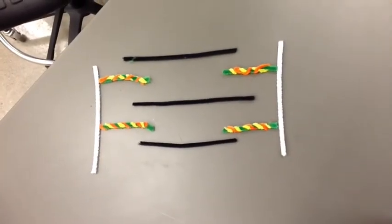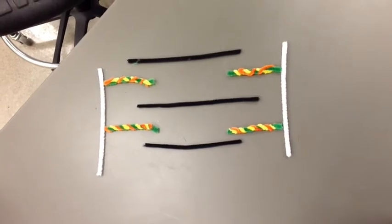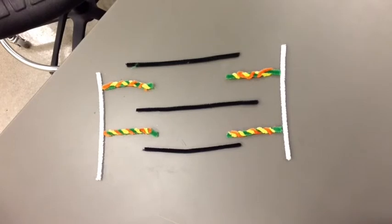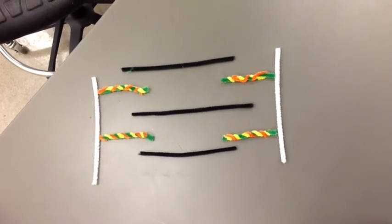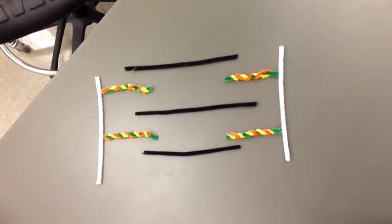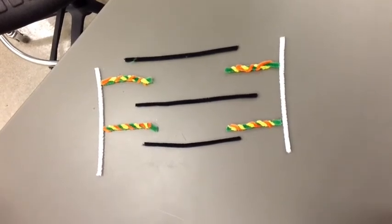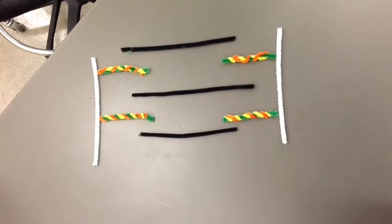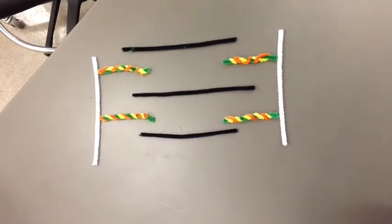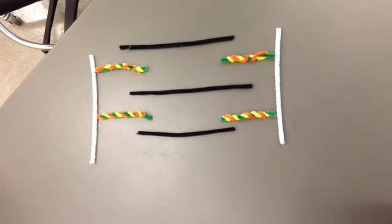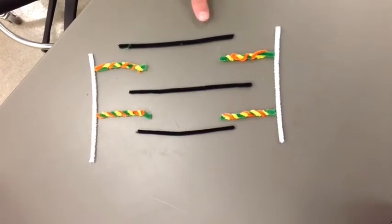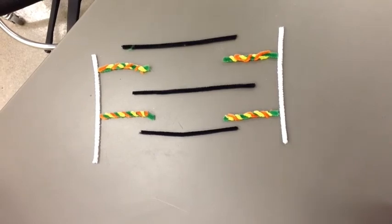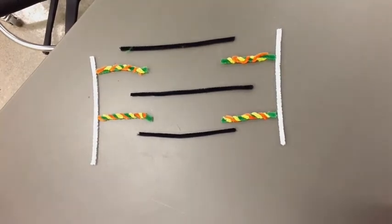A sarcomere is a highly ordered unit of thick and thin filaments. A sarcomere extends from one Z-disc to another Z-disc, where the thin filaments attach, represented by the white pipe cleaners. The A-band is the length of the thick filament, myosin, represented by the black pipe cleaner. The I-band is the length of the thin filaments, actin-troponin and tropomyosin, represented by green, orange, and yellow pipe cleaners. The H-band is the part of the A-band where no thin filaments overlap, so the dark band is a little wider, which is right in the middle of the A-band, represented by the black pipe cleaner.